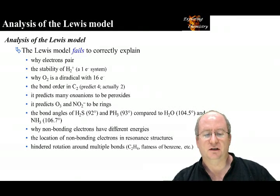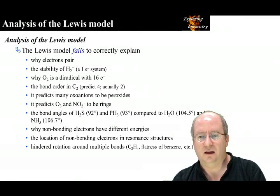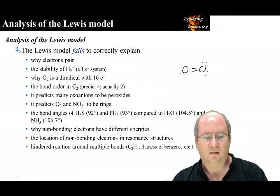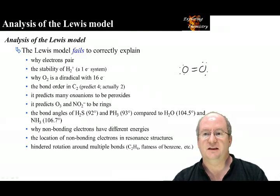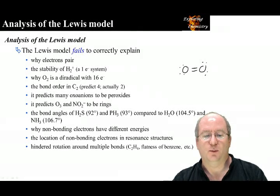Looking at oxygen, we have always drawn oxygen with all paired electrons. This is wrong. This is not the electronic structure of oxygen. We will see the correct electronic structure when we complete the chapter on quantum mechanical bonding.